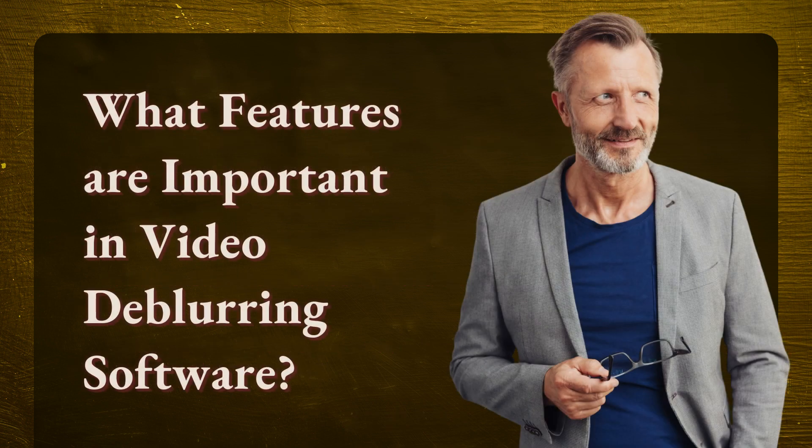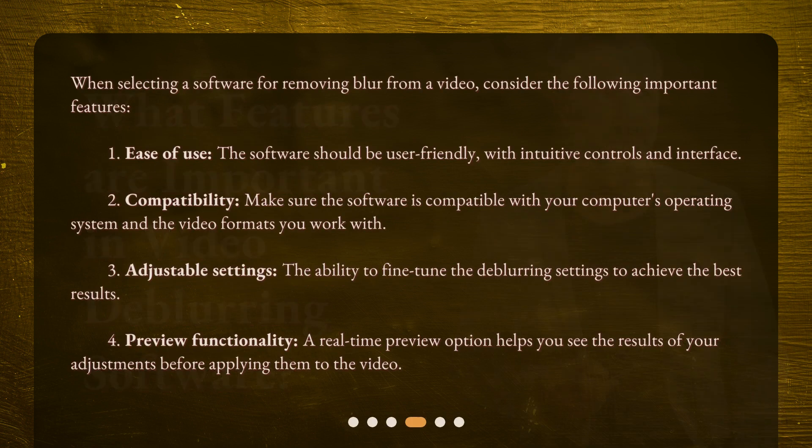What features are important in video deblurring software? When selecting software for removing blur from a video, consider the following important features: 1. Ease of use — the software should be user-friendly, with intuitive controls and interface. 2. Compatibility — make sure the software is compatible with your computer's operating system and the video formats you work with. 3. Adjustable settings — the ability to fine-tune the deblurring settings to achieve the best results.